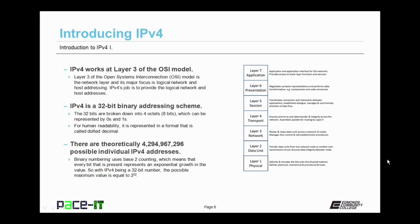IPv4 works at layer 3 of the OSI model. Layer 3 of the Open System Interconnection model is the network layer and its major focus is on logical network and host addressing. IPv4's job is to provide the logical network and host addresses, and it does this extremely well.